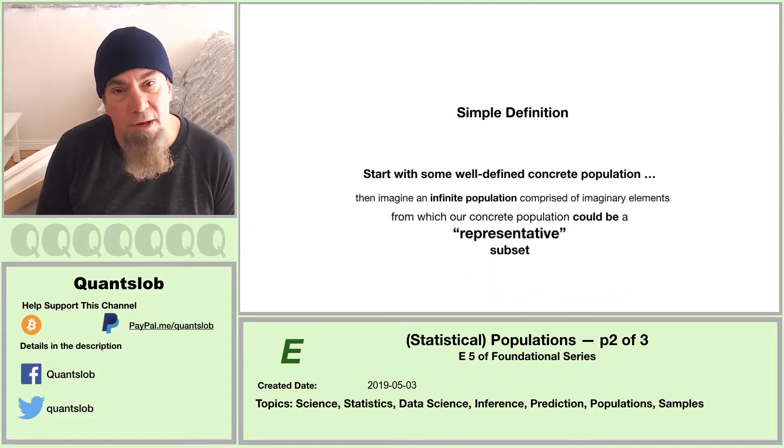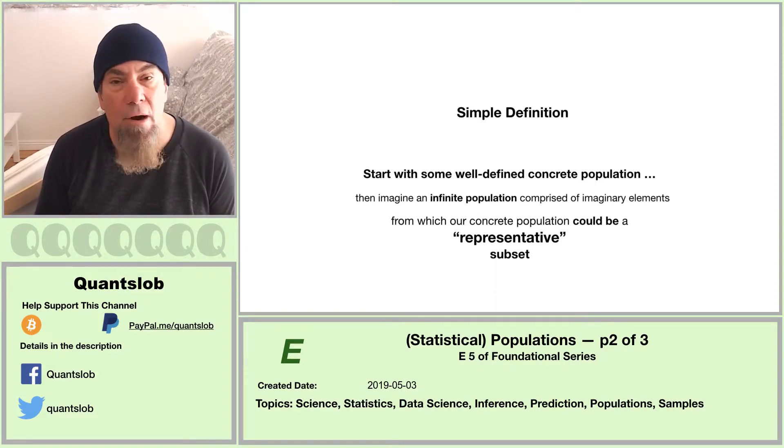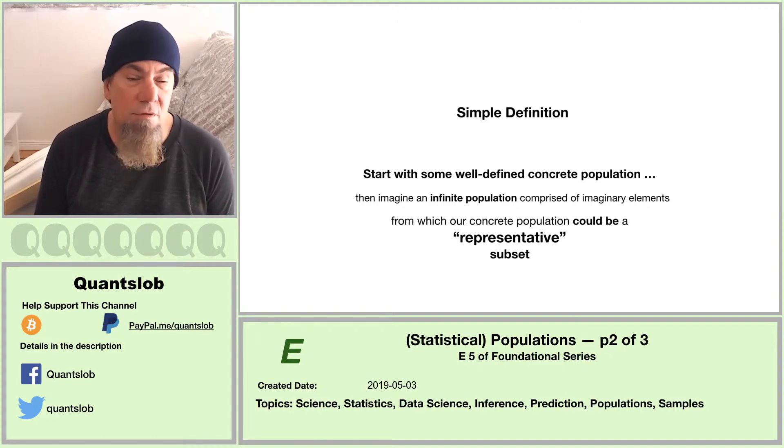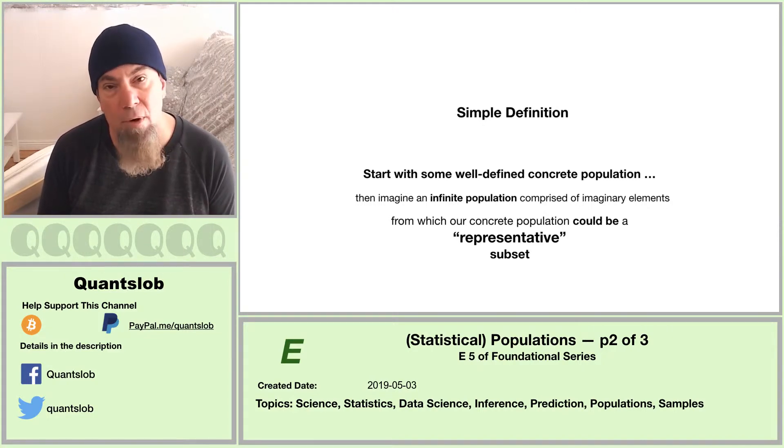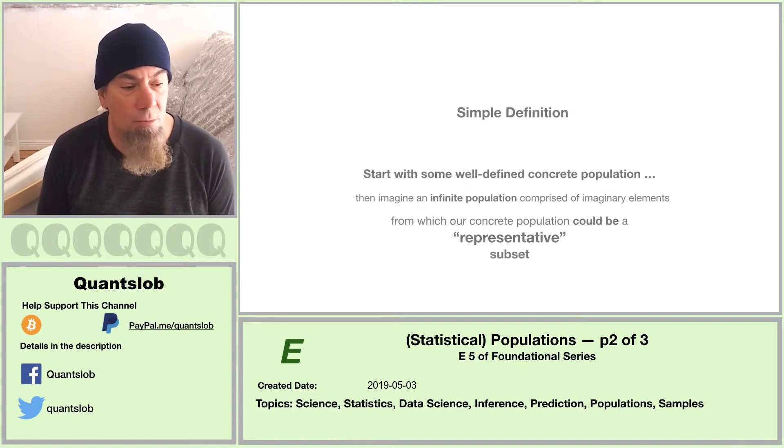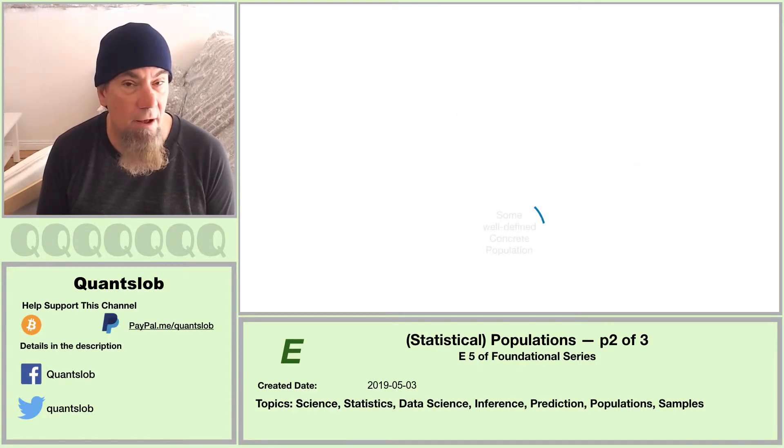So here's a definition I'll offer some parallels. One way to think of a superpopulation is as an imaginary infinite collection of every element that could be a member of some concrete population of interest, or an imaginary population from which some concrete population of interest could have been realized.